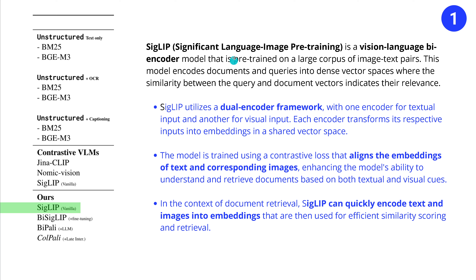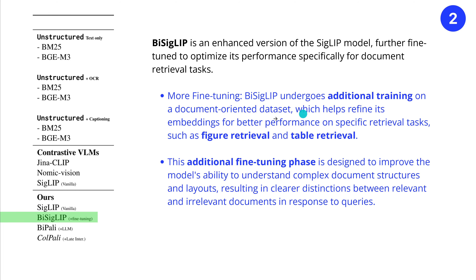Let's start with the first one: SigLIP. Significant Language-Image Pre-training is a vision language bi-encoder model, pre-trained on a large corpus of image-text pairs. The model encodes documents and queries into a dense vector space — similarity between query and document vectors indicates their relevance. We have with SigLIP the first step: a dual encoder framework — one encoder for textual input and another for visual input. Each encoder transforms their respective inputs into embeddings in a shared vector space.